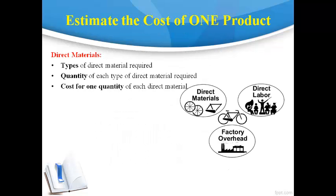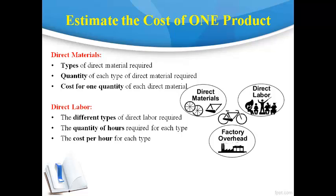Most products require more than one type of direct material. The quantity of each material and the cost for one quantity is necessary to determine the total cost of direct material for one product. Most products go through different steps as the product is made, and each step in the production process requires a different type of direct labor.